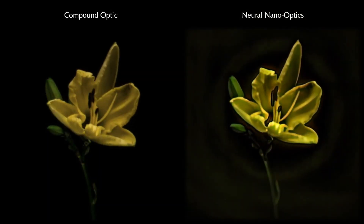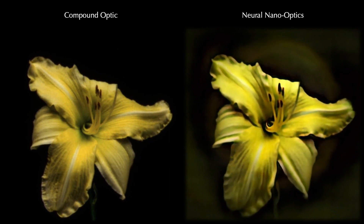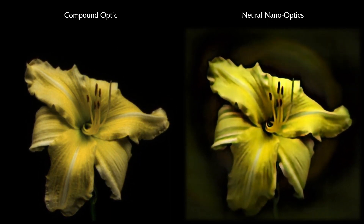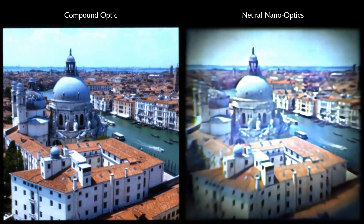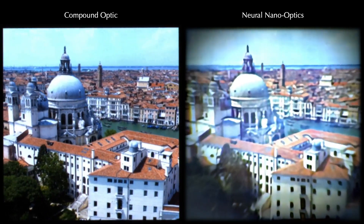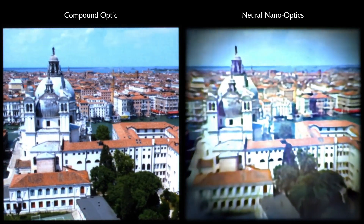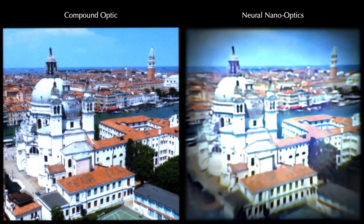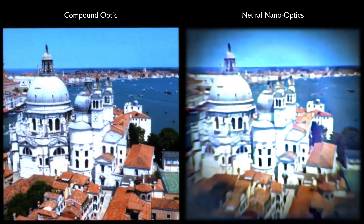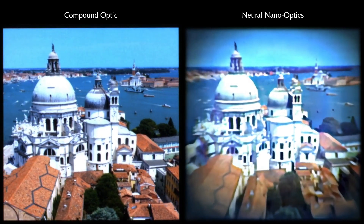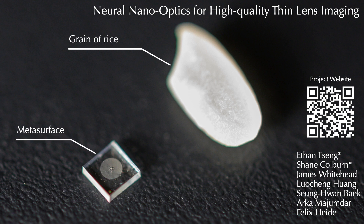Here are side-by-side comparisons of the conventional camera and the nano-camera. We achieve high-quality color results comparable to the conventional camera on diverse scenes. And all of this power is packed into a lens smaller than a grain of rice.